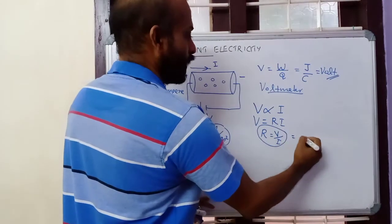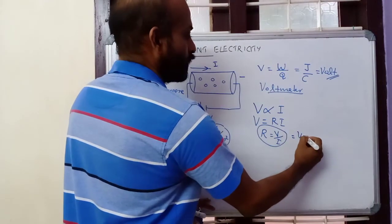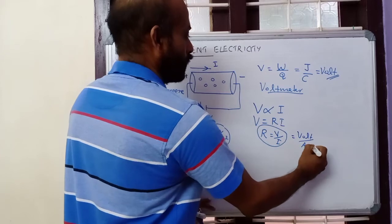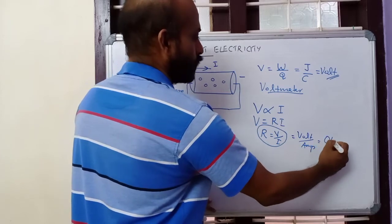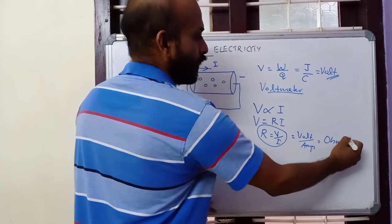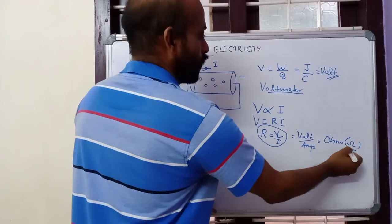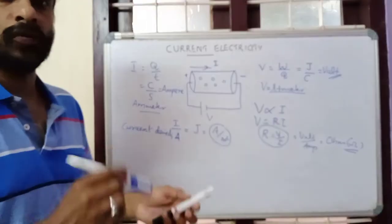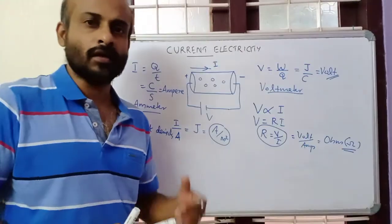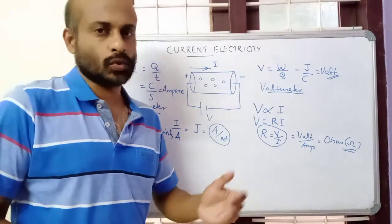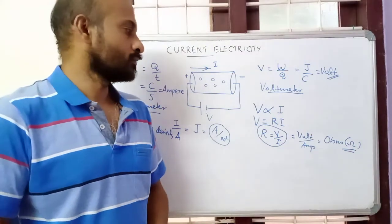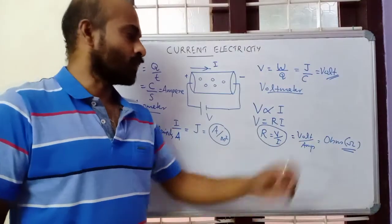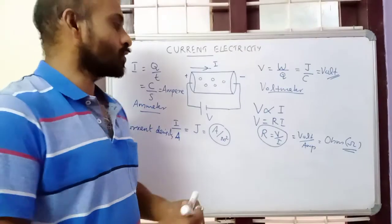V by I has unit volt per ampere, otherwise known as ohm. Ohm has the symbol omega. So ohm is the unit of resistance. Resistance is the opposition provided by the conductor for the flow of electric charges through it. The resistance of a conductor depends mainly on four factors.